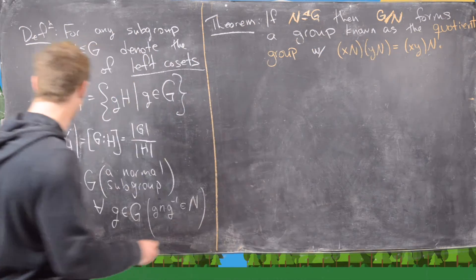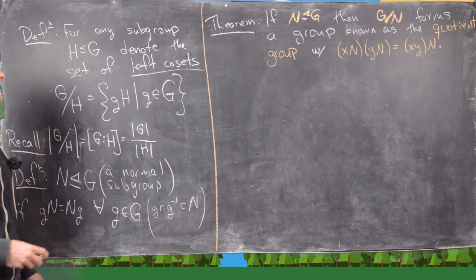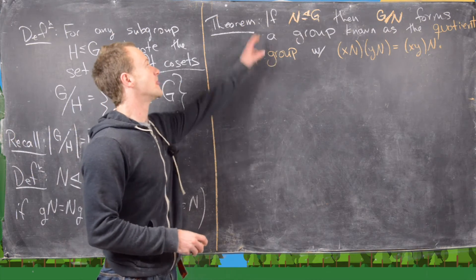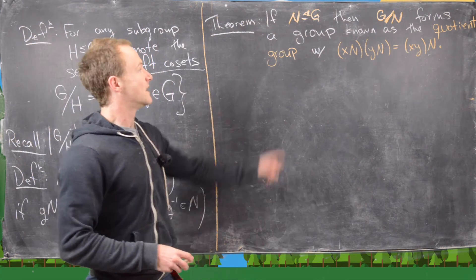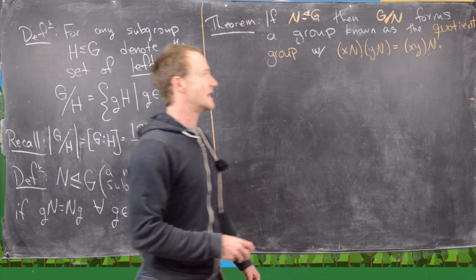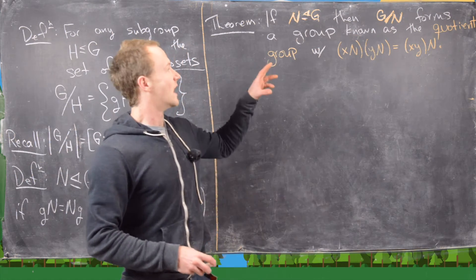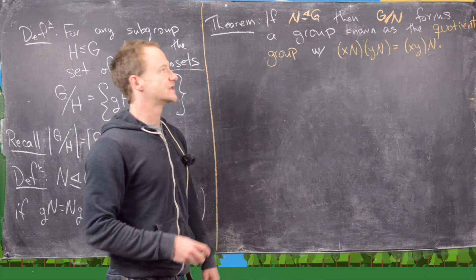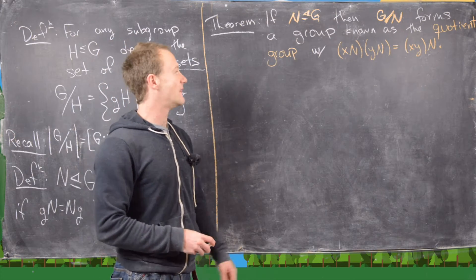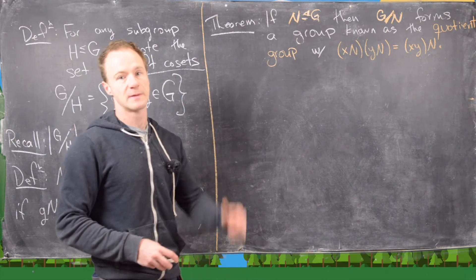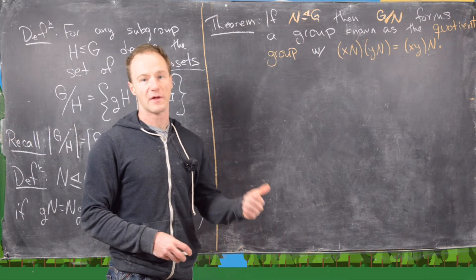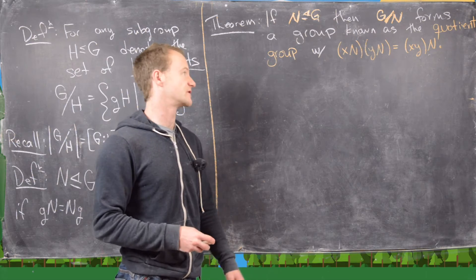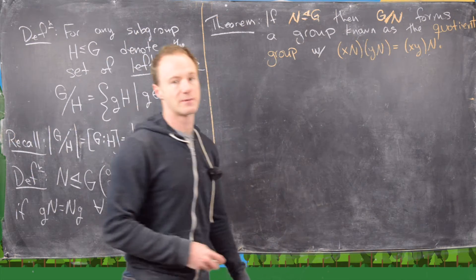Normal subgroups play a very important role when talking about the set of cosets, and that role is spelled out by this theorem. If we have a normal subgroup N, then G mod N — the set of left cosets — forms a group, known as the quotient group. Since it forms a group, we need to specify the operation. The operation is: coset xN times coset yN equals coset (xy)N.